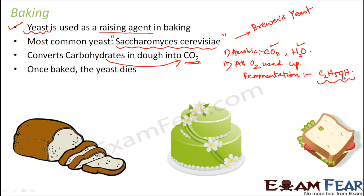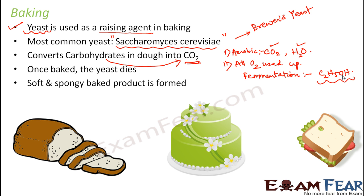Please note that the way dough is treated in the case of baking is a little different from the way dough is treated in the case of preparing idli or dosa — we will talk about that as well. But for all bakery items like cakes and breads, yeast is used as the raising agent, the fluffiness is due to the formation of carbon dioxide, and carbon dioxide is formed by the process of fermentation. As a result of this entire process, a soft and spongy baked product is formed.